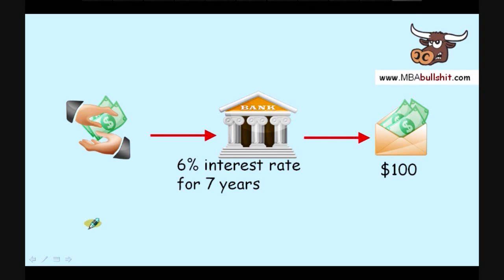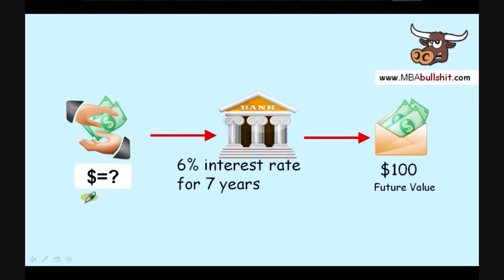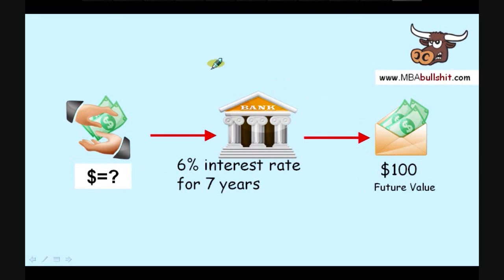The question is: how much do you think your grandmother gave you seven years before today — or seven years before it becomes $100? In this problem, this $100, which is the amount after seven years, is called future value. The future value is written as FV in the formula.